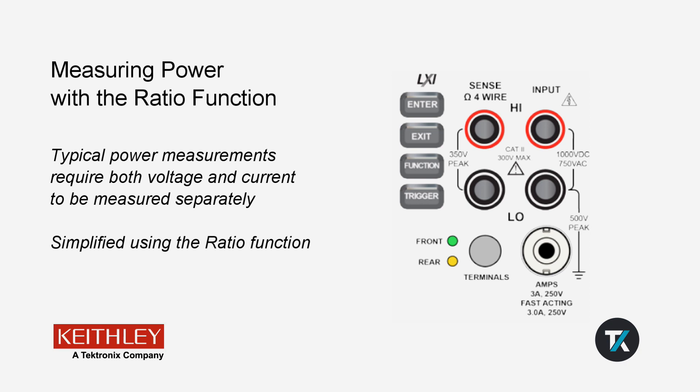Typically, this would require two separate measurements to be made, one using the input terminals and the other using the amps terminals. However, this can be simplified to a single measurement using the ratio function.